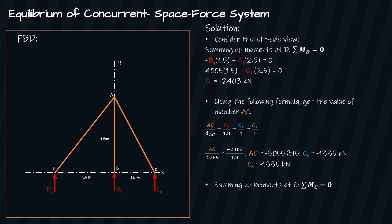Summing up moments at C we get Dy times 2.5 and By times 1. Dy times 2.5 plus 4005 times 1 equals zero. We get Dy equals to negative 1632 kilonewtons. Again, your assumption for the component Dy is wrong.